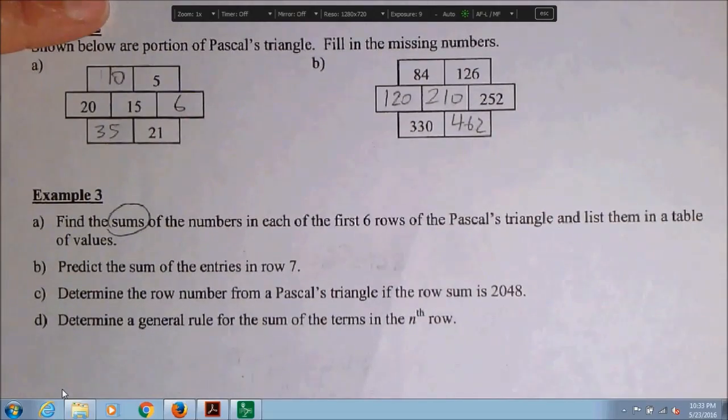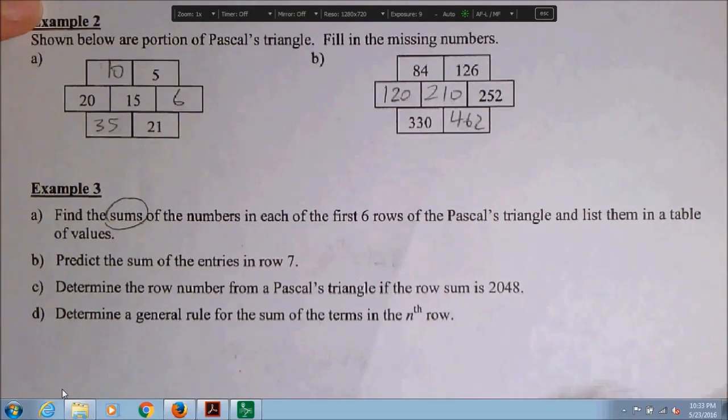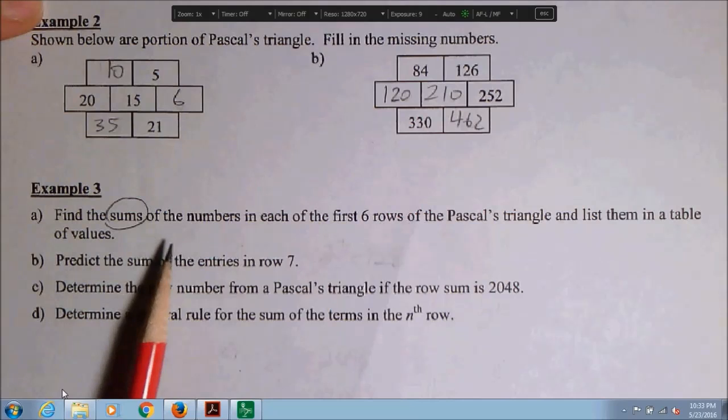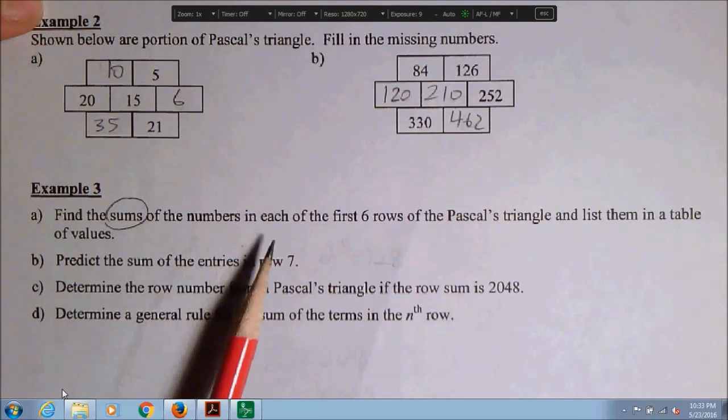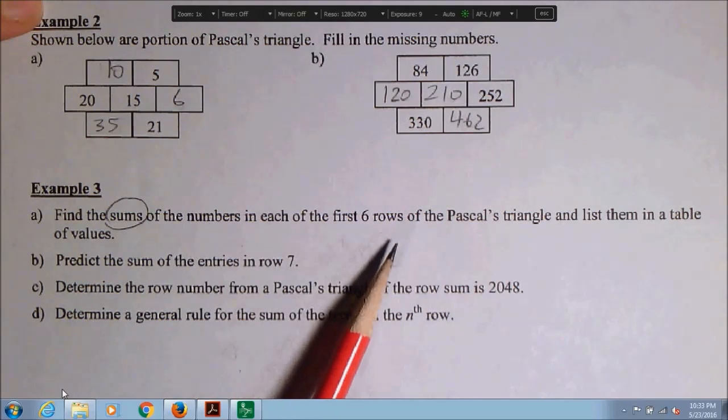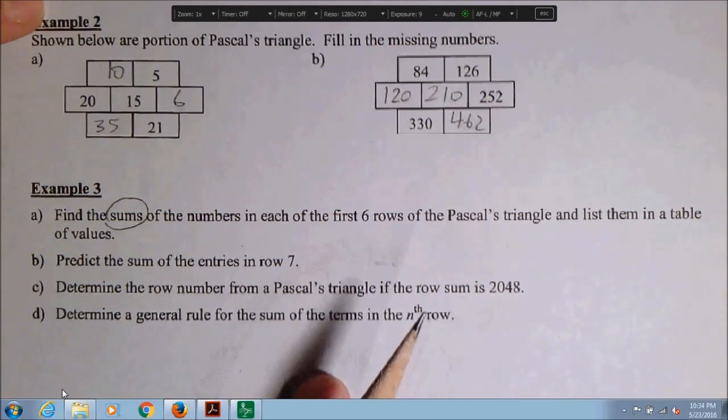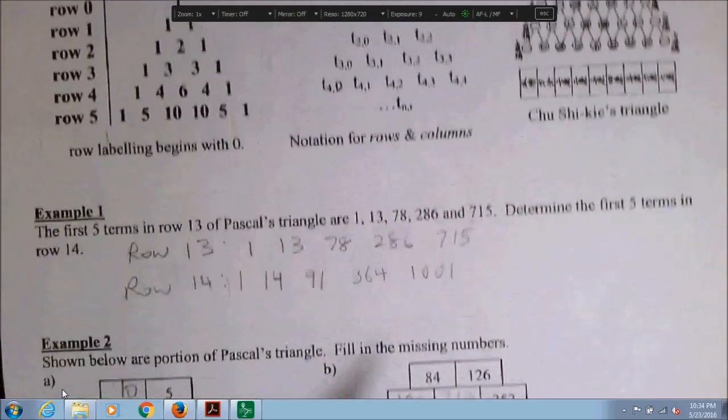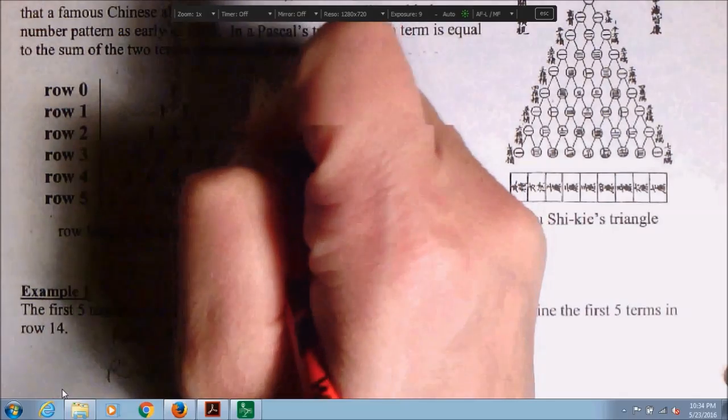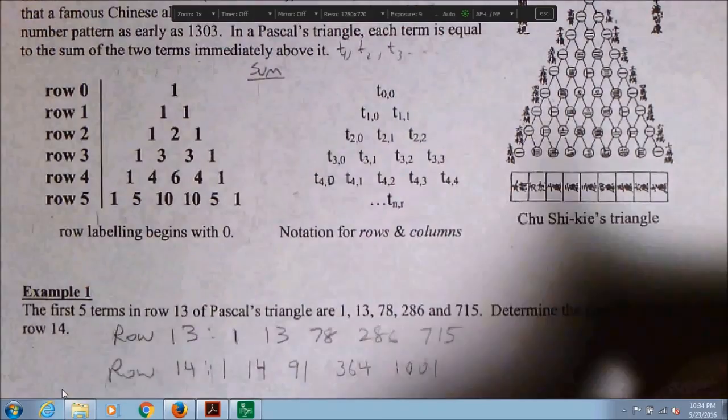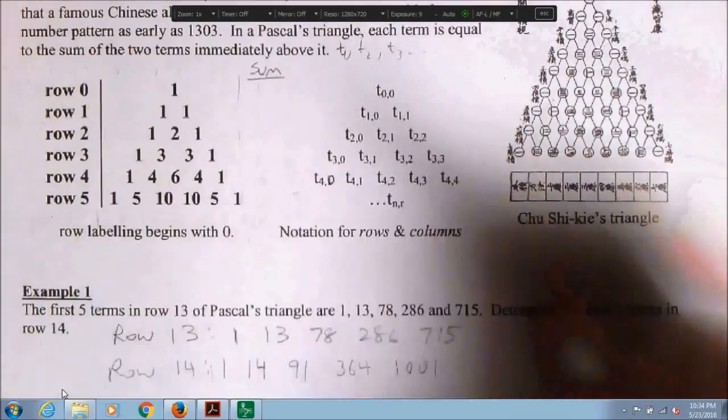Example 3 is another cool thing, cool pattern about Pascal's triangle. It says find the sums of the numbers in each of the first six rows of Pascal's triangle. Find the sums and list them in a table of values. So let's go up to the triangle and let's write the sum of each row.